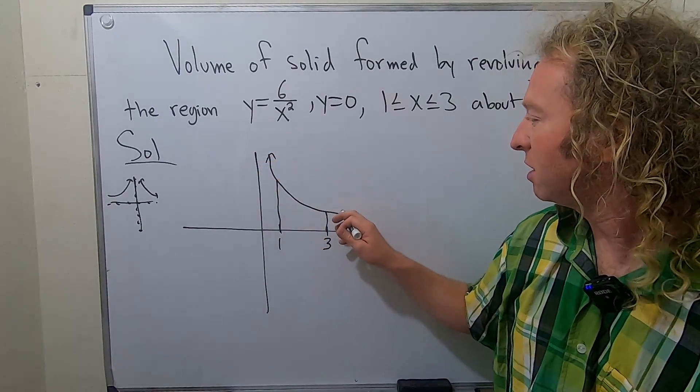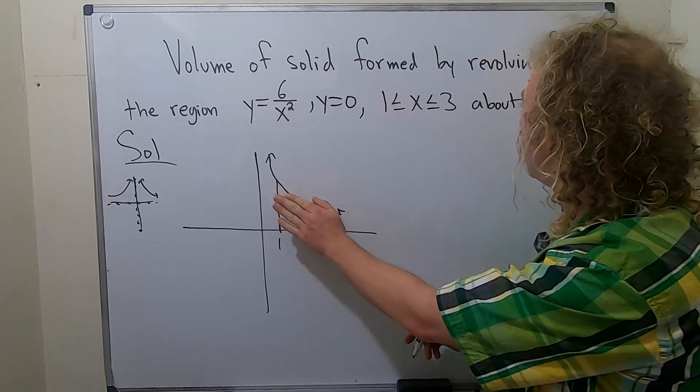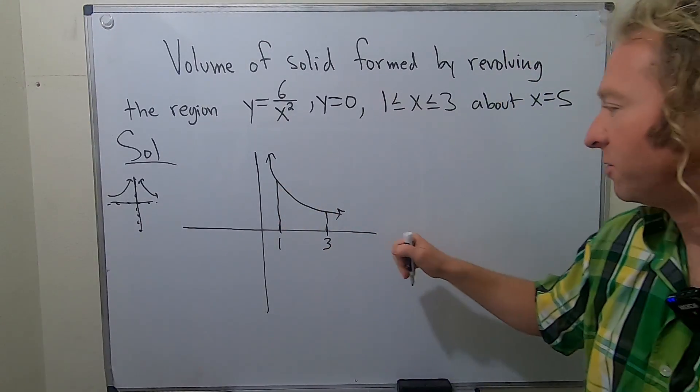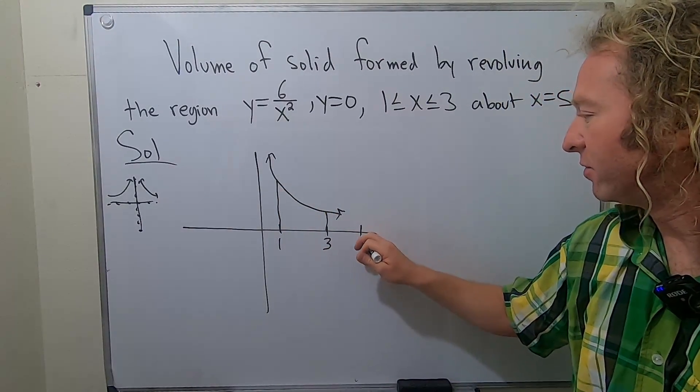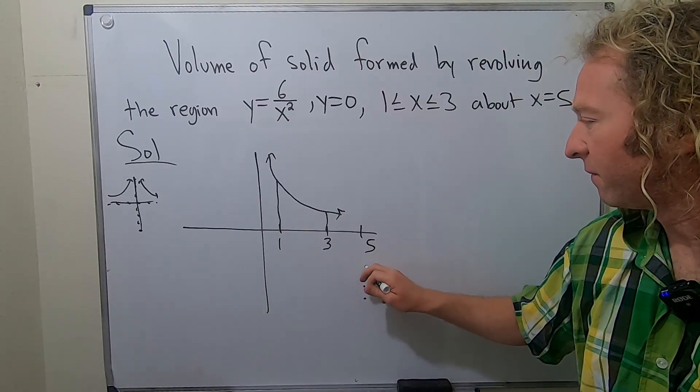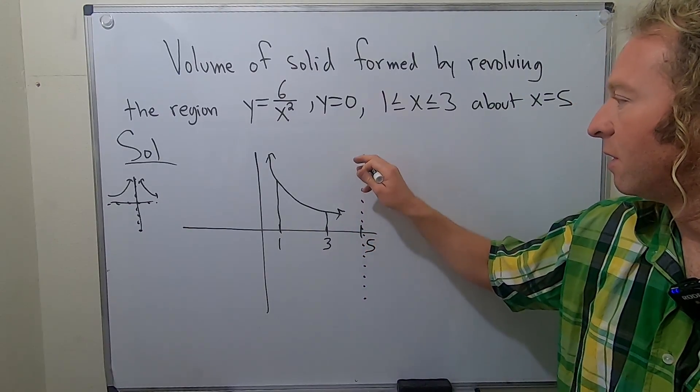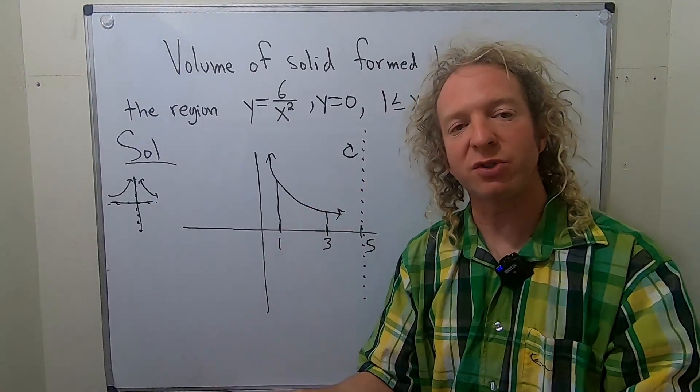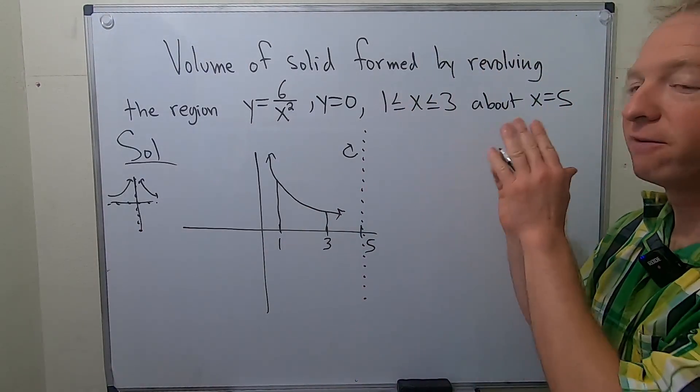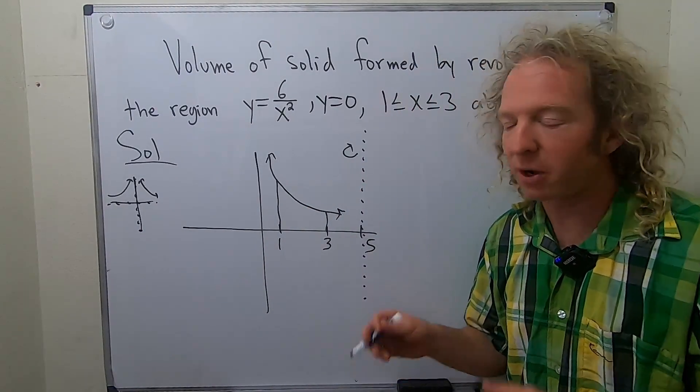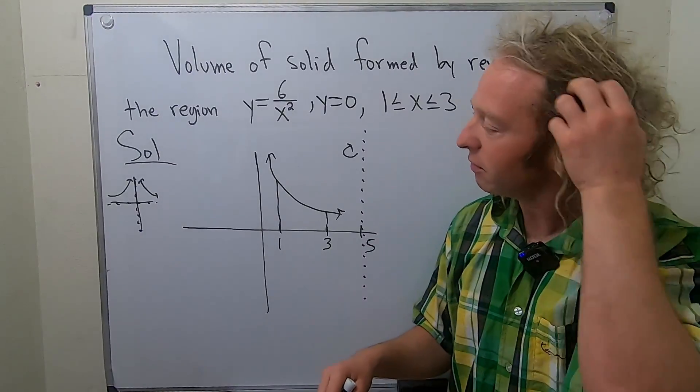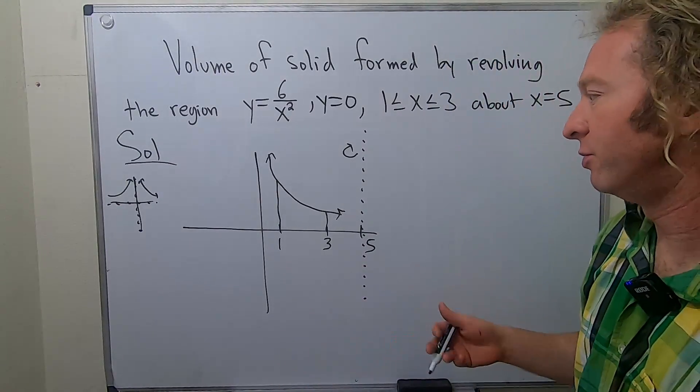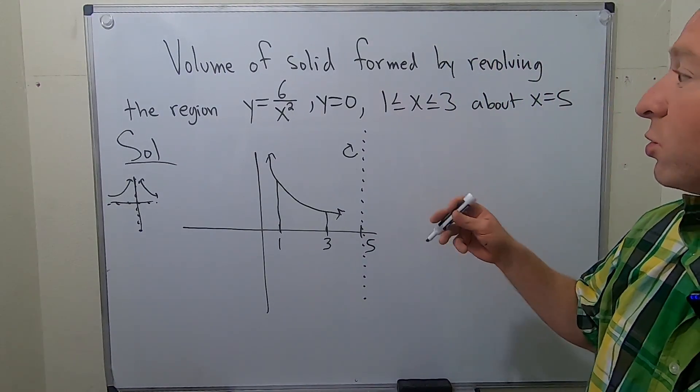Okay, and we're spinning this region, we're taking this region and we're spinning it around x equals 5. So 5 is over here. So we're taking this region and we're going to spin it this way and we're going to get a three dimensional solid and we're going to find the volume of that solid using calculus. Okay, so there's a bunch of stuff to know in order to do this. First of all, we're going to use what's called the shell method.